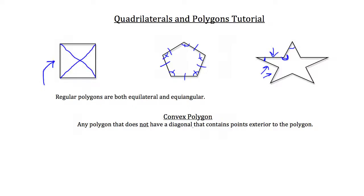Those diagonals do not contain points exterior to the polygon. Any point along those lines is going to be interior to the polygon. The same with our pentagon here. You could connect a bunch of different diagonals inside the pentagon.